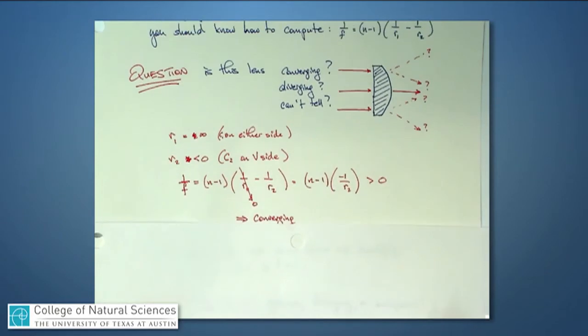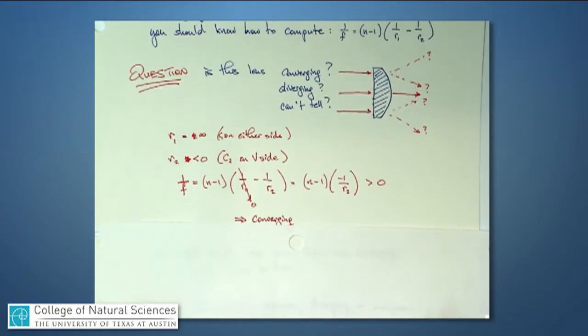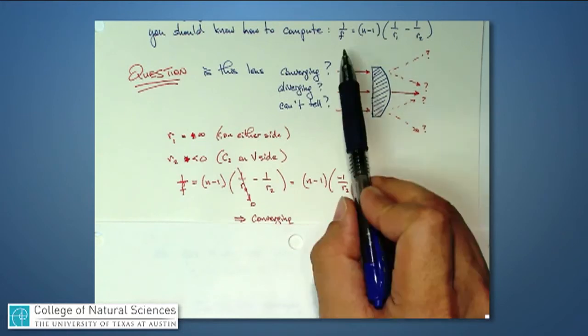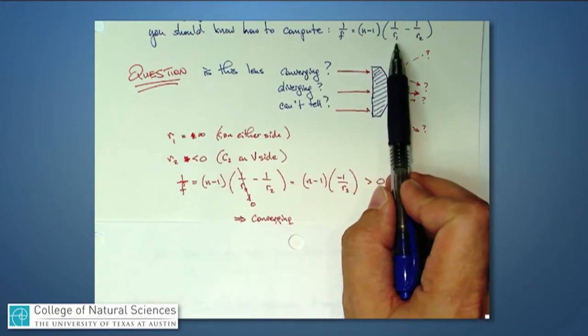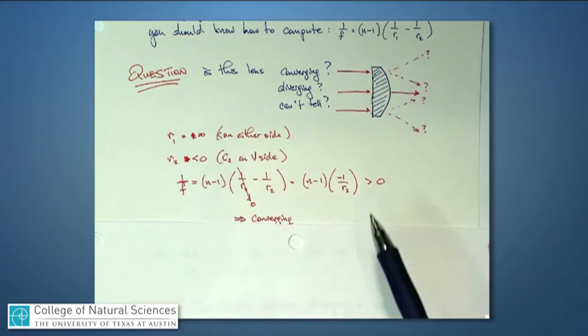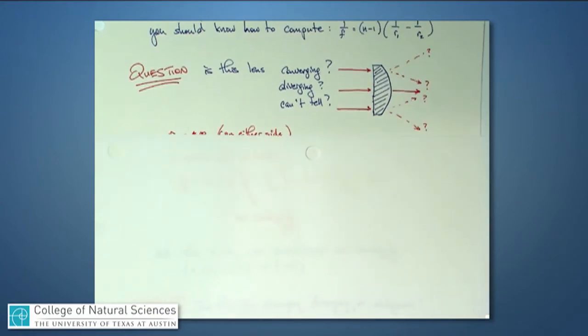I want us to remember this expression, 1 over f is equal to n minus 1, 1 over r1, minus 1 over r2, and get some practice computing this, at least mentally, with a lens like the one I've drawn here.